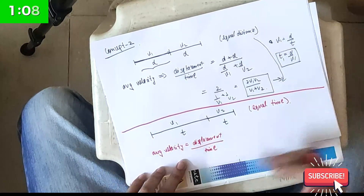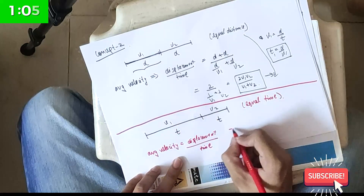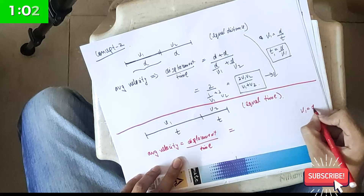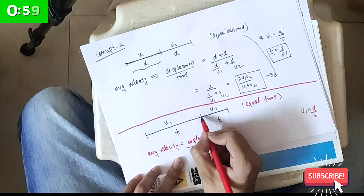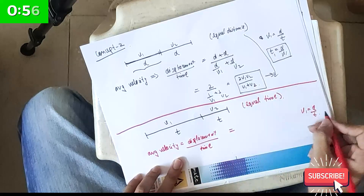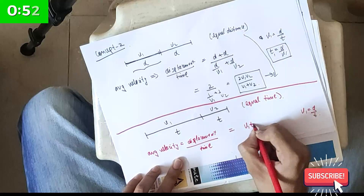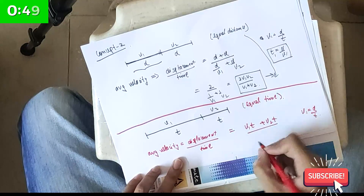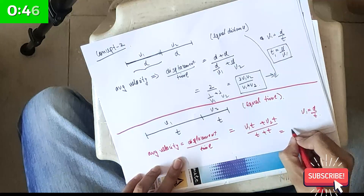For the equal time case, displacement in each interval uses v = d/t since velocity is constant. So displacement is v1·t for the first part and v2·t for the second part. Average velocity = (v1·t + v2·t) / (t + t) = (v1 + v2) / 2.